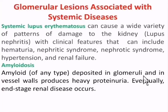In amyloidosis, the proteolytic enzymes cannot degrade these precipitates, so there will be a build-up of amyloid protein precipitate. This will affect the structure and function of the organs. In the kidneys, amyloid deposits in the glomeruli and vessel walls, producing heavy proteinuria and eventually leading to end-stage renal disease.